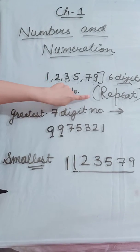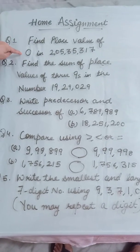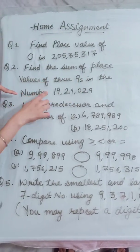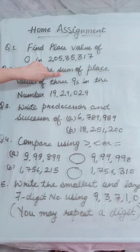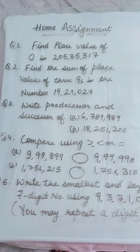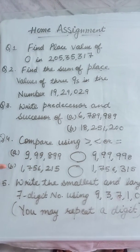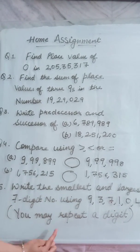Now I am giving you a home assignment based on today's topics. Question 1: find the place value of zero in the given number. Question 2: find the sum of place values of the three nines in the given number. Question 3: write the predecessor and successor of two given numbers. Question 4: compare the numbers using the appropriate signs. Question 5: write the smallest and largest seven-digit number using the given digits — you may repeat a digit.